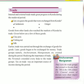Early trade was carried out through the exchange of goods for goods — the barter system. Later, goods began to be exchanged for money. Trade groups such as Anjuvanam and Manigramam existed during the period. Realizing the importance of trade, the Perumals extended every help to the trade groups. Tax on trade was an important source of income during the medieval period.